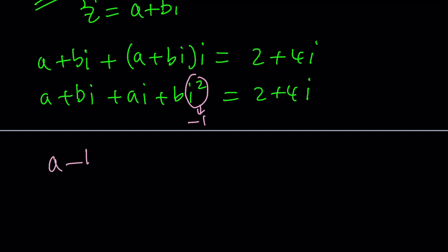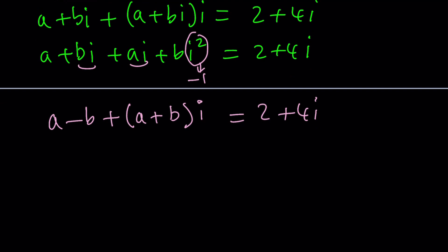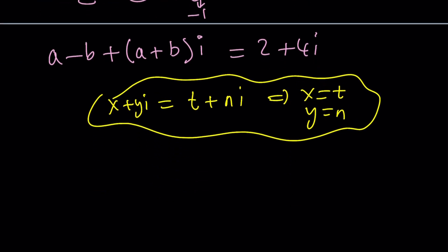We get a minus b as the real part, and we can combine these two things into one, and write it as a plus b times i. So now we have two complex numbers, and remember, if two complex numbers are equal to each other, so like if x plus yi is equal to z plus, I probably shouldn't use z because z is a complex number by itself. Let's just say t plus ni, and this implies x equals t and y equals n. Make sense? So that's how you can set two complex numbers equal to each other. Here, this means a minus b is 2, and a plus b is 4.